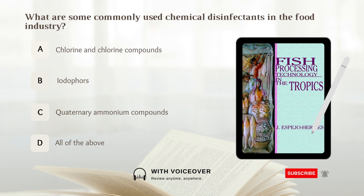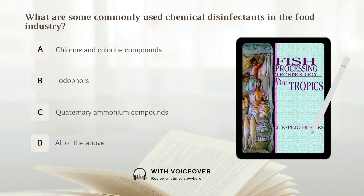What are some commonly used chemical disinfectants in the food industry? A. Chlorine and chlorine compounds. B. Iodophores. C. Quaternary ammonium compounds. D. All of the above. Answer: D. All of the above.